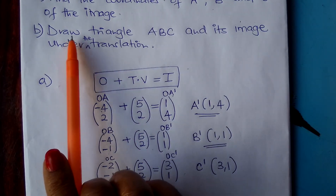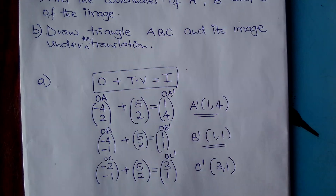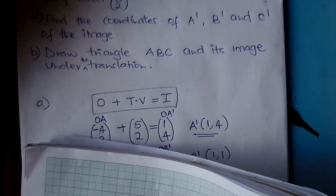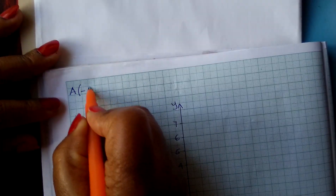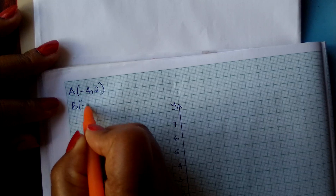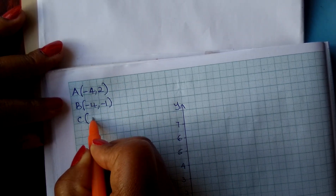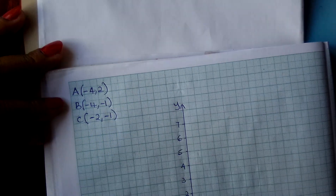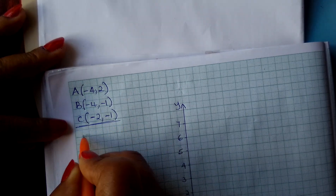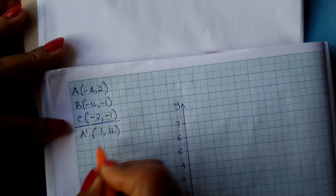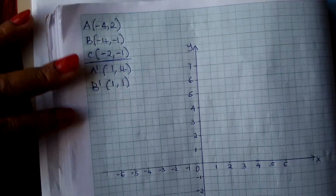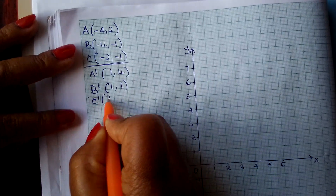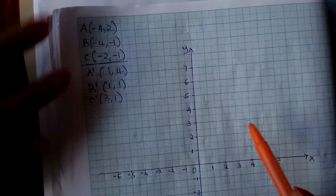Now let us go to part B: draw triangle ABC and its image under the translation. To summarize, from the object: A is at (-4, 2), B is at (-4, -1), C is at (-2, -1). And from our calculations: A' is at (1, 4), B' is at (1, 1), and C' is at (3, 1). We can now plot the object and the image.